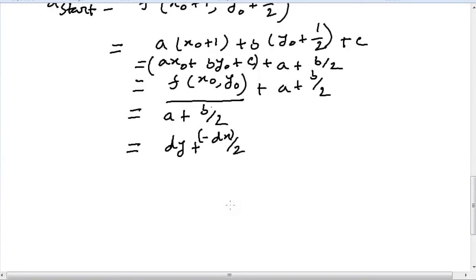So in order to avoid this fractional point, we multiply both sides by 2, and that gives us 2d_start equals twice dy minus dx.